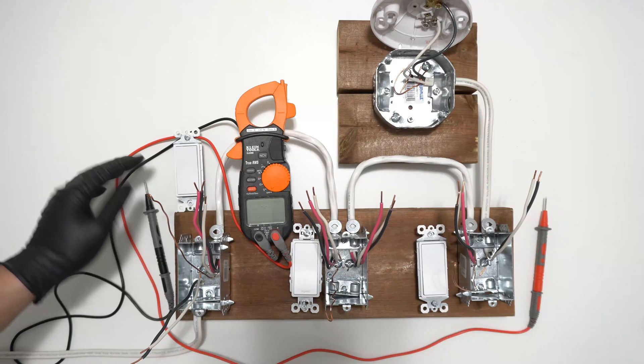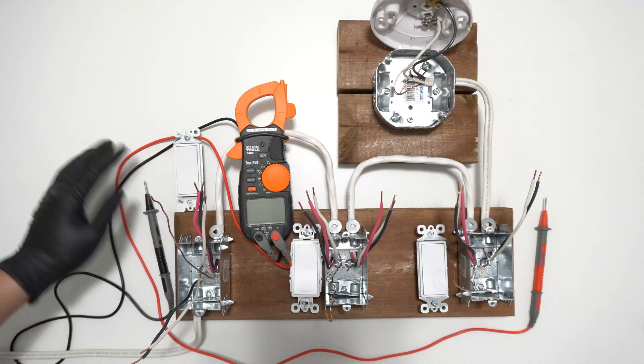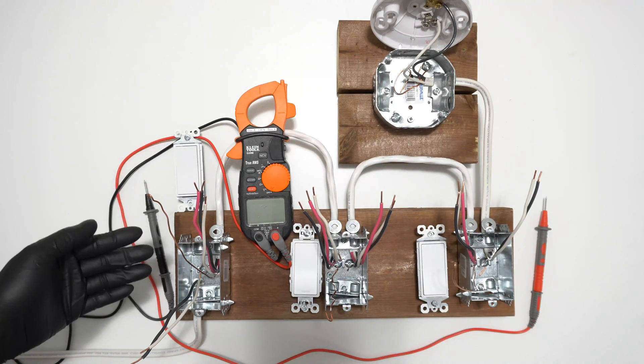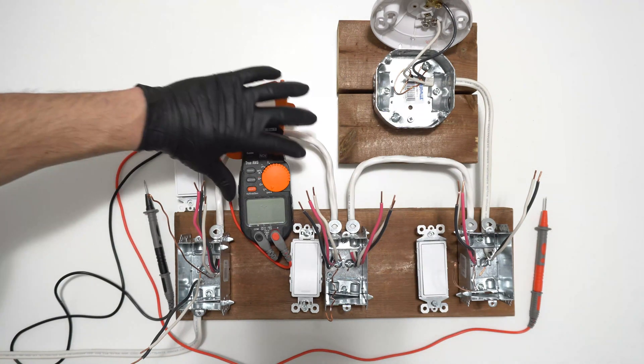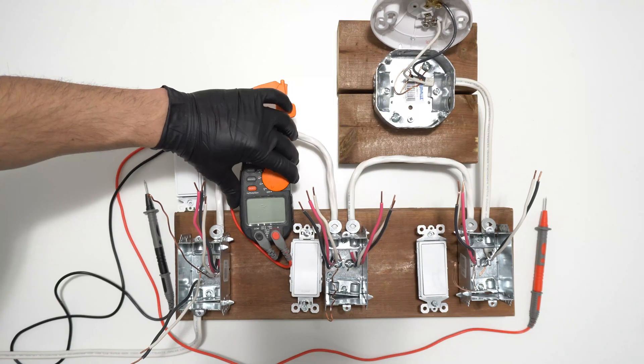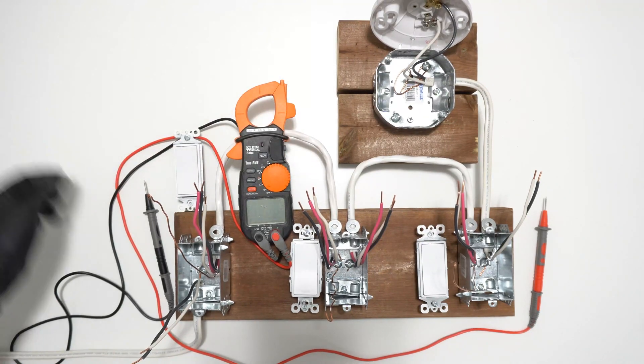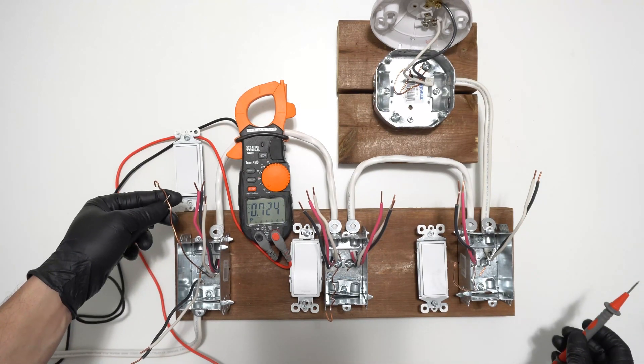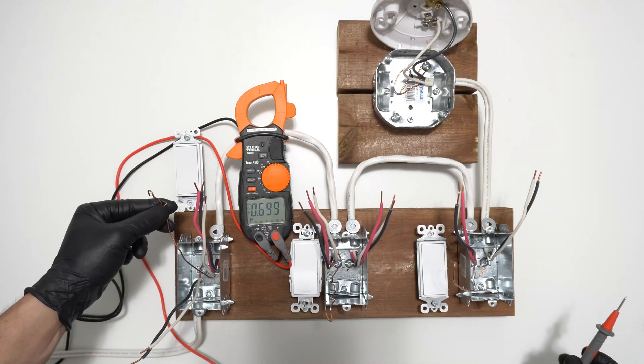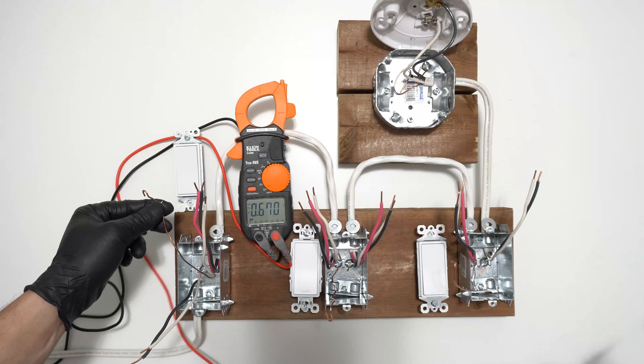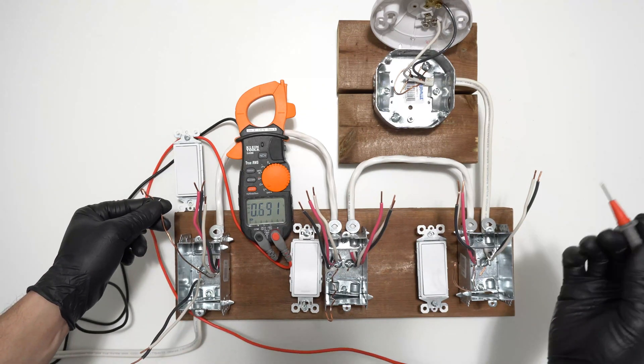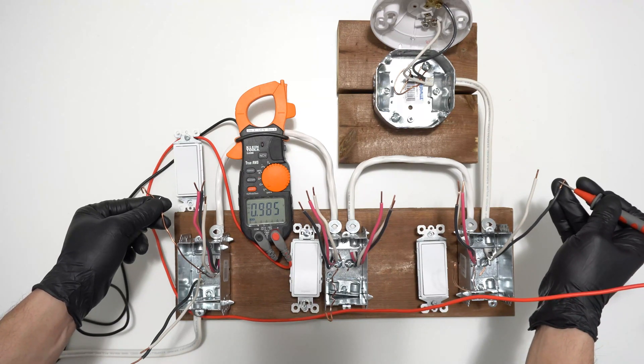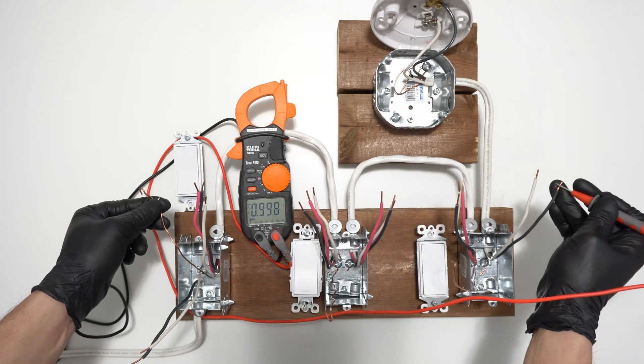If you are still unsure if you have turned off the right breaker or not, it's best to use a voltmeter to find the potential difference of the circuit. First thing we need to do is select voltage on the meter and next have one lead touching the ground wire, and hopefully all the ground wires are bonded and connected properly. Next we will have the other lead touch all the wires to see if there's a potential difference close to 120.